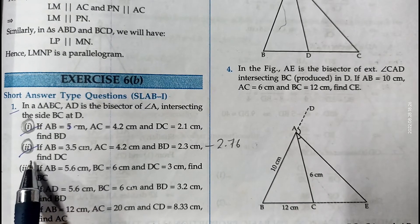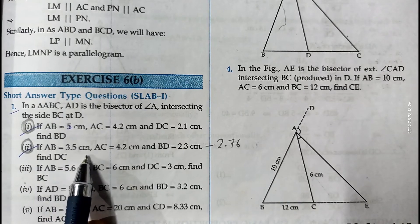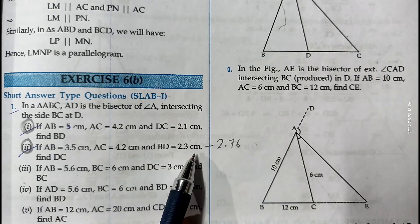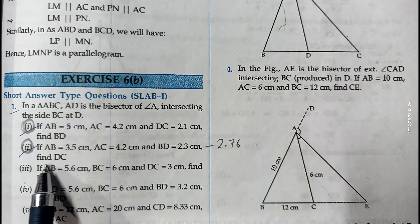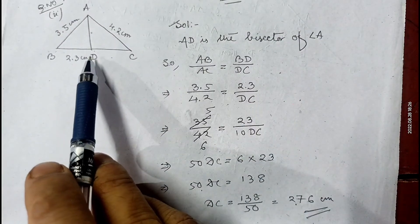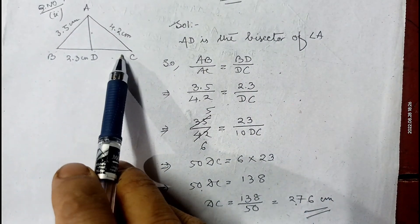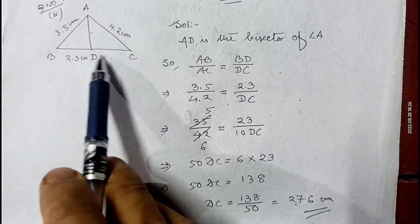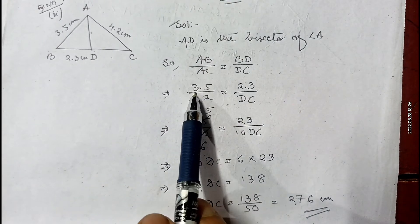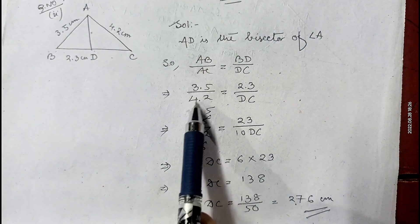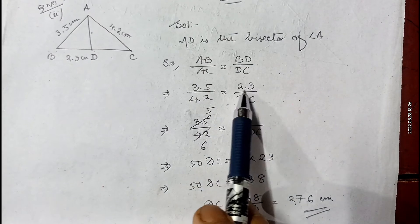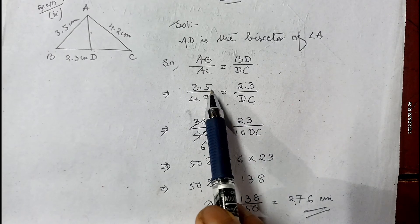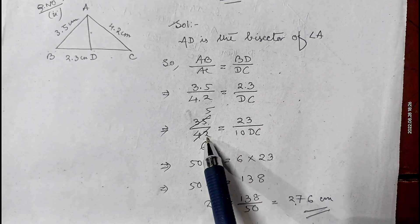Now let me show the second part. Here it is given AB equals 3.5 cm, AC equals 4.2 cm, and BD equals 2.3 cm, and we have to find the length of CD. Since AD is the bisector of angle BAC, from the Angle Bisector Theorem we can write AB by AC equals BD by CD. So 3.5 by 4.2 equals 2.3 by CD.